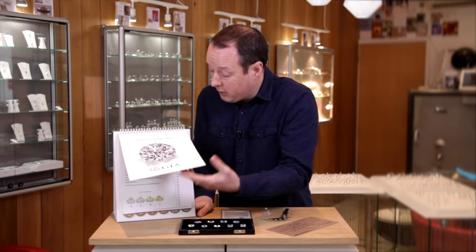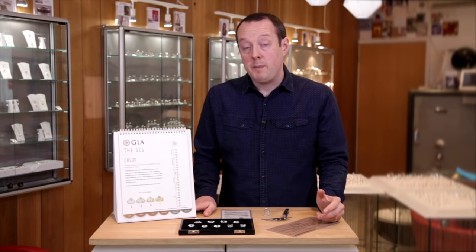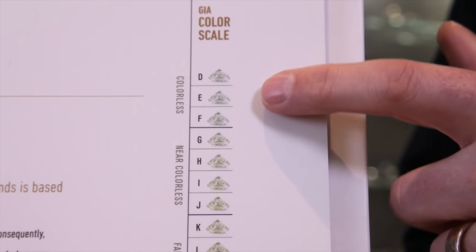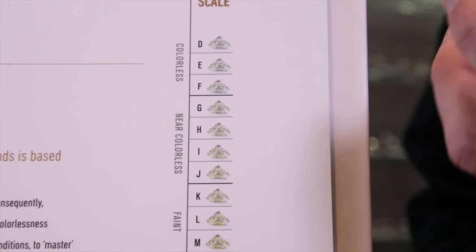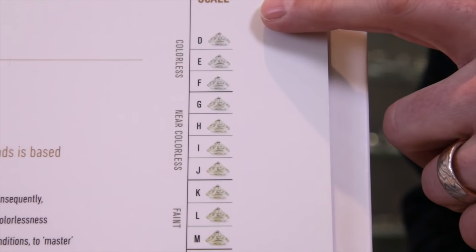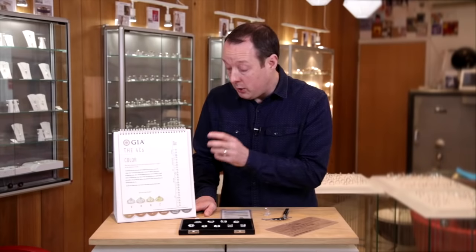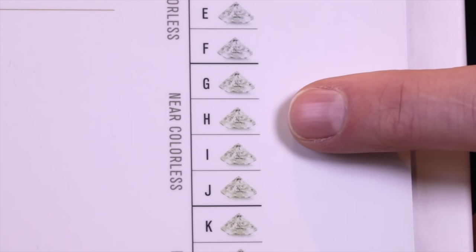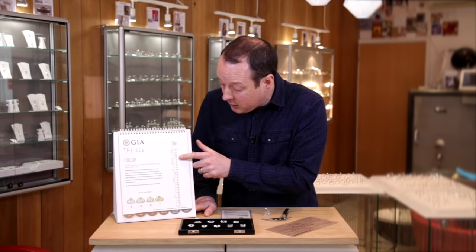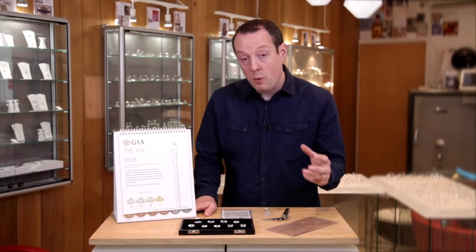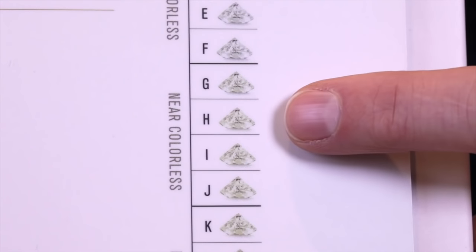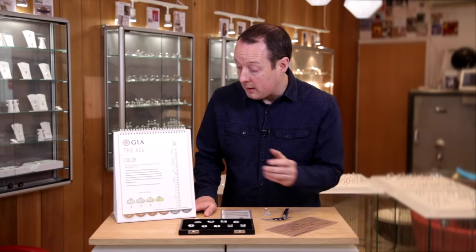Next we're going to look at the colour of a diamond and how the colour grade affects a stone. Colour is graded alphabetically — there's no A, B, or C; it just starts at D, which is the perfect colour. As you go further into the alphabet, diamonds get more of a yellowy-brown colour. It's an incredibly subtle step between each grade. You'll only really see colour creeping in around I or J, where you get a slight yellow hue. Above that — H or above — you get a really nice white diamond. So an H or G colour is not a bad grade; it will still look really white.